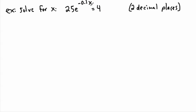We want to get x on its own. I don't want to take the natural log of both sides yet because I have something times something else, so I want to simplify first. I'll keep the e to the minus 0.1x and divide both sides by 25, giving e to the minus 0.1x equals 4 over 25.